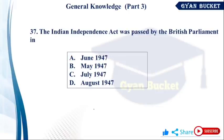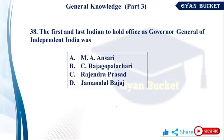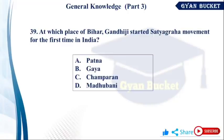The Indian Independence Act was passed by the British Parliament. The first and last Indian to hold office as Governor General of independent India was C. Rajagopalachari — option number B. At which place in Bihar did Gandhi start the Satyagraha movement for the first time in India? Champaran, Bihar.